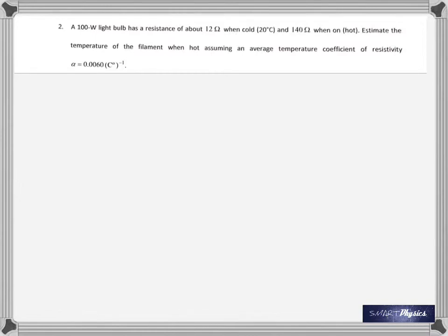Okay, brings us to the second one. A 100 watt light bulb has a resistance of about 12 ohms at 20 degrees Celsius, 140 ohms when it's hot. Estimate the temperature of the filament when it is hot, assuming an average temperature coefficient of resistivity 0.0060 per degree Celsius. So in this one we have R naught and we have R T. Now that's the formula: R_T is the resistance at the high temperature which we do not know.